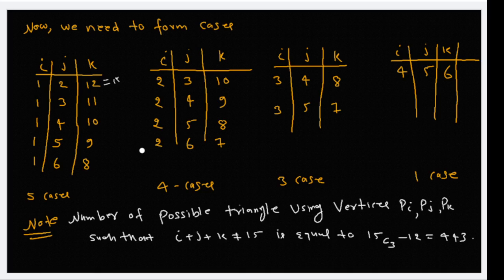These cases need to be subtracted from the total number of cases, which are 15C3. So the number of possible triangles with vertices pi, pj, pk such that i plus j plus k not equal to 15 is equal to 15C3 minus 12, which equals 443.